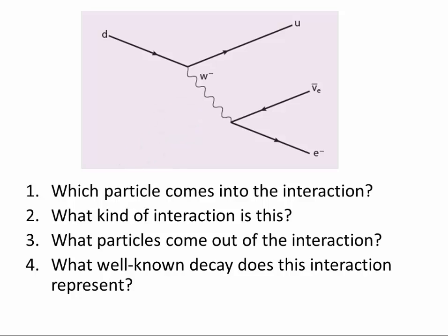What particles come out of the interaction? Well, you end up with an up quark, an antineutrino, and an electron. And what well-known decay does this interaction represent? Well, there's one example where you've seen a down quark turn into an up quark, or basically a neutron turns into a proton, and it emits an electron and an antineutrino. This is the Feynman diagram which shows what happens - it's done by the mediation of this W minus which is the weak force.